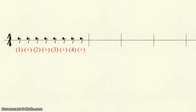Finally, eighth rests, which receive half of a beat. If an eighth rest is on the first half of a beat, it will get the beat number in parentheses. If the eighth rest is on the second half of the beat, it will be written as an 'and' in parentheses.